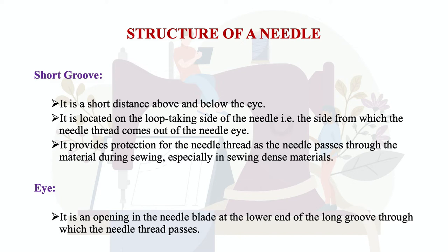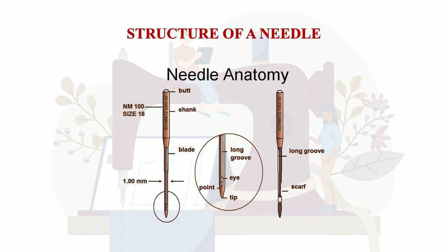The eye is the opening in the needle blade at the lower end of the long groove, through which the needle thread passes. It is the small hole you see in the needle, and the point from where the thread is inserted. You can see in the picture that the eye and the needle tip are the portion that goes into the fabric, along with the long groove and scarf just above the eye.